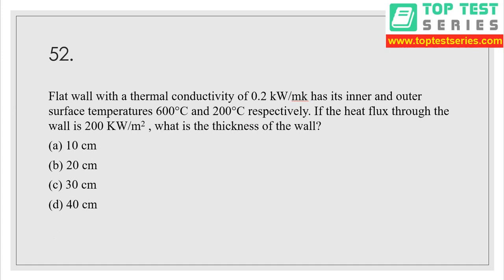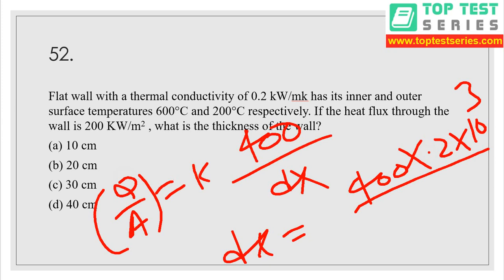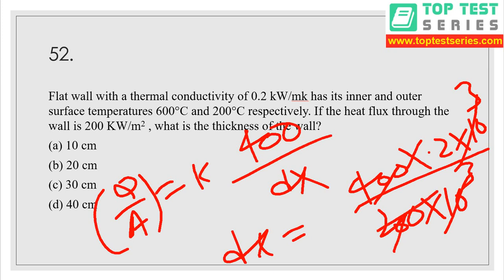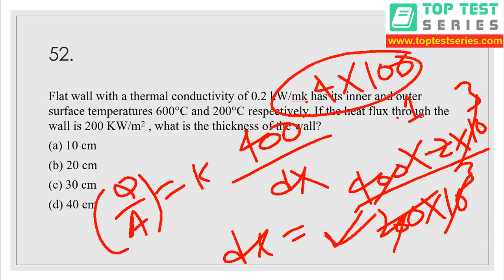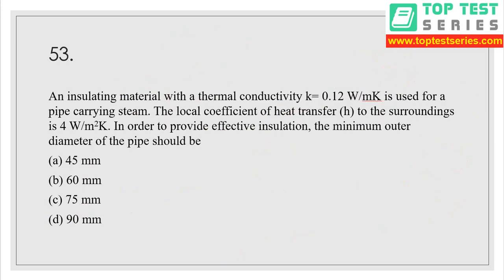Question number 52: a flat wall with thermal conductivity 0.2 kW per meter Kelvin has inner and outer surface temperatures of 600°C and 200°C respectively. Heat flux through the wall is given. Q/A = K × ΔT / dx. dx = ΔT × K / (Q/A) = 400 × 0.2 × 10³ / (200 × 10³) = 0.4 m = 40 centimeters — therefore option D is the correct answer.